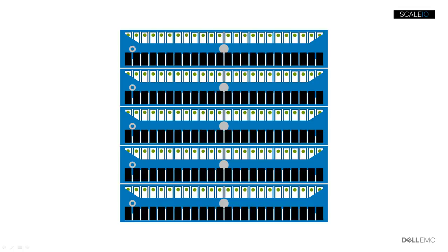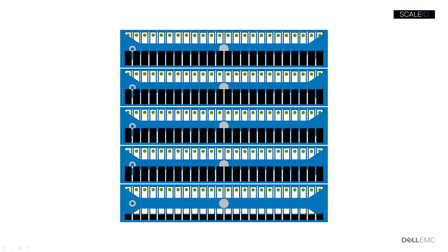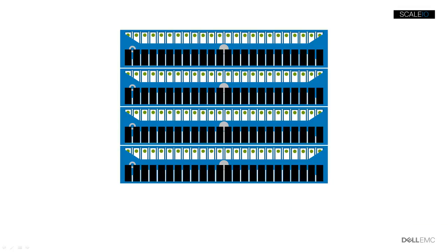When drives are manually removed from the storage pool, a similar operation migrates user data to the drives that will remain in the pool. Once the data has been migrated off the drives, empty nodes can be removed. Unplanned node or drive failure results in a similar self-healing operation that re-establishes data protection in the same distributed, balanced, and minimal way.